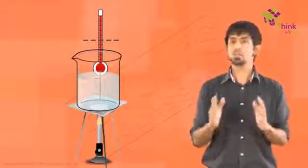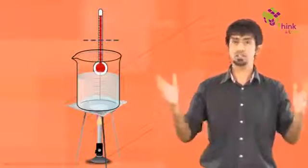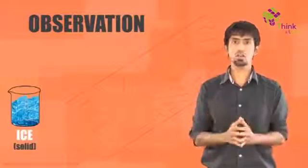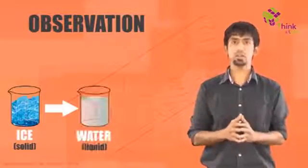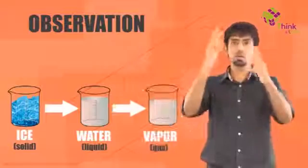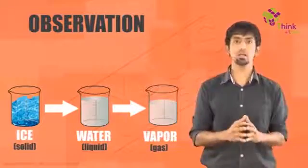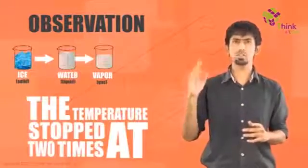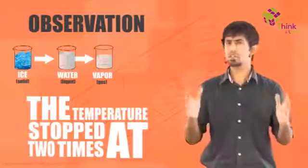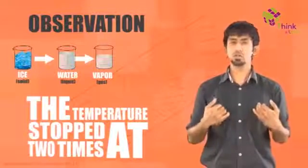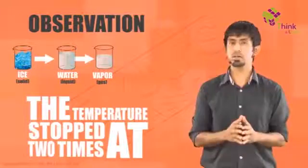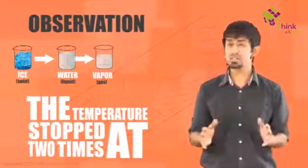So, you start observing that when it's boiling, again, the temperature is constant. Okay. So, this is what you've seen even though we don't know why exactly this is happening. So, what do you observe? Ice which started off as a solid, became liquid and then even you could see the little fumes going up. So, it boiled, it became gas and in all this process, the temperature stopped at two times.